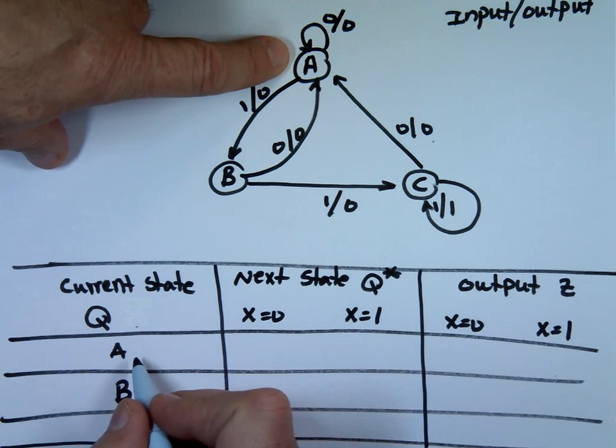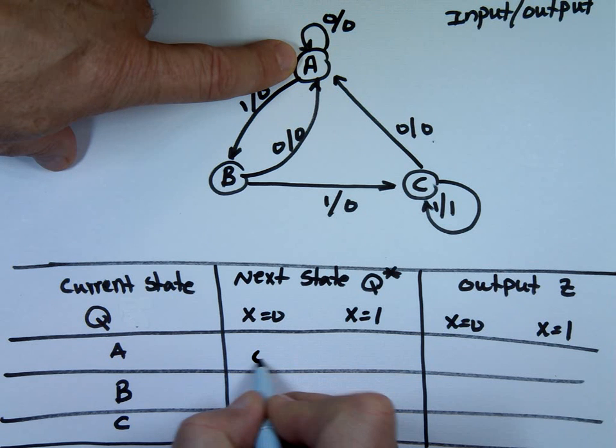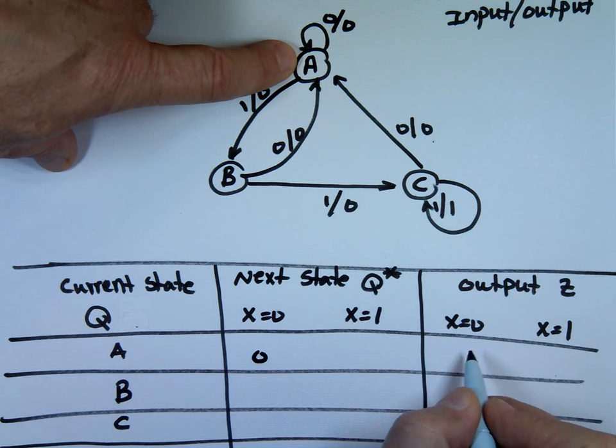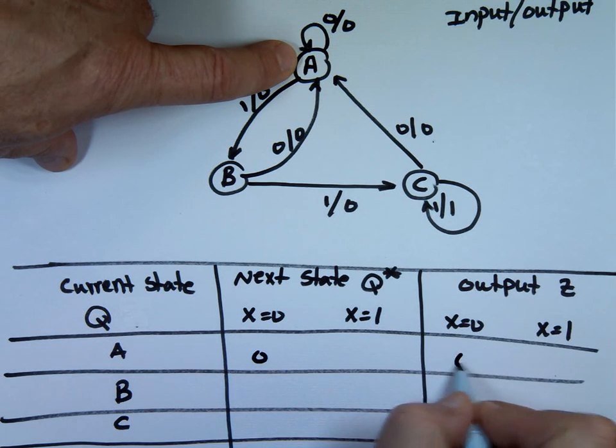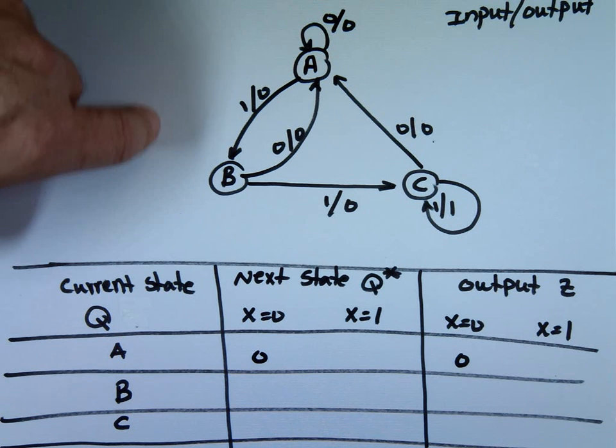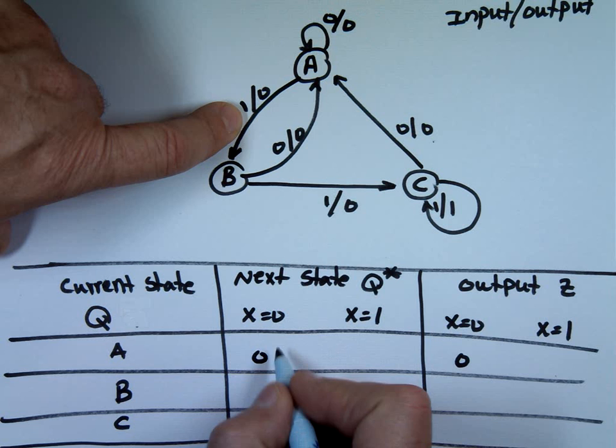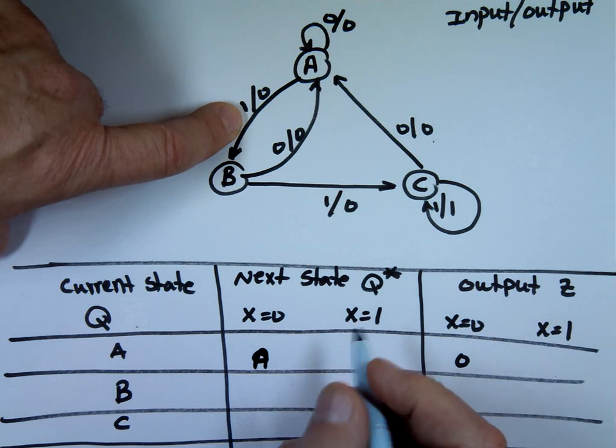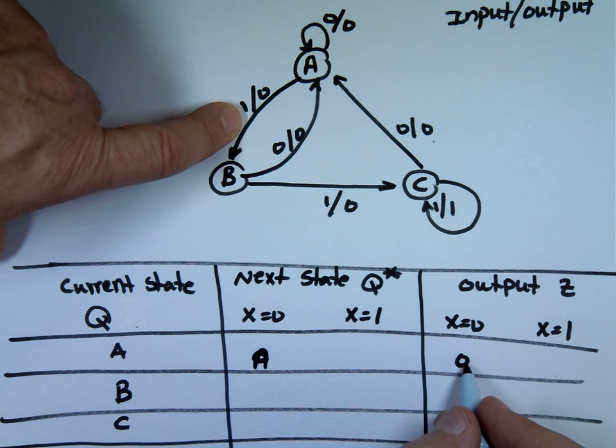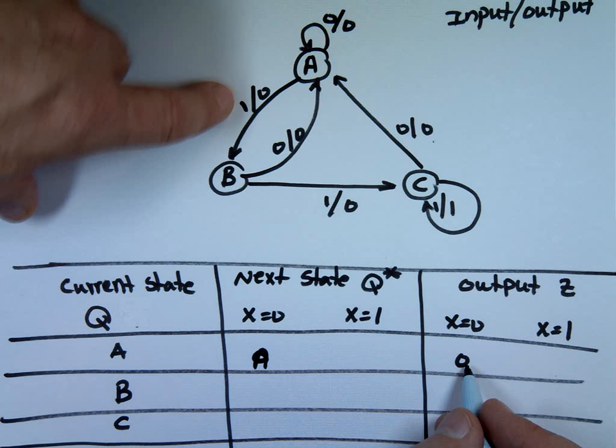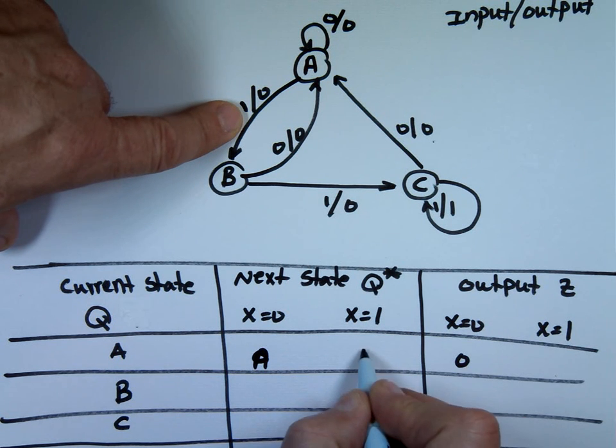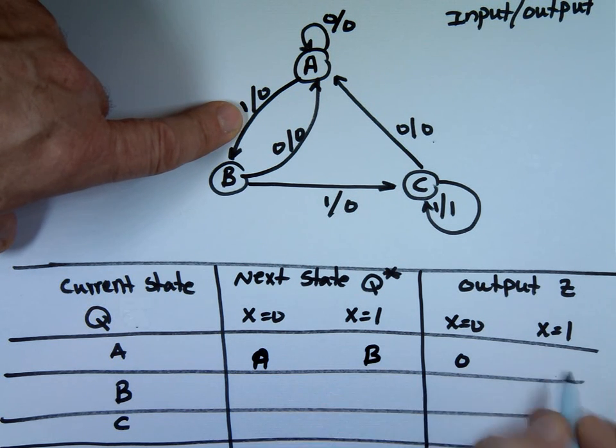So let's look at this. I'm at state A. If my input is 0, if X is 0, my output is 0. I stay at A. And my output is 0. If I'm at state A and my input is 1, I go to where? To B. And what's my output? Still 0.